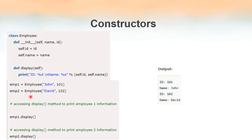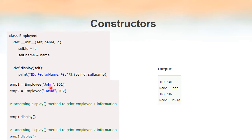When we created the object, we are actually calling the constructor. `emp2 = employee('david', 102)` means `david` is copied to `name` and `102` is copied to `id`. When we print `self.id` and `self.name`, `self` represents the current object. So when calling `emp1.display`, `self` means `emp1`, and `self.id` gives `101`. When calling `emp2.display`, `self` means `emp2`, and we get `102` and `david`.